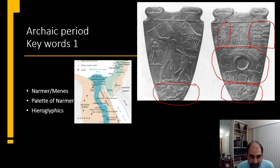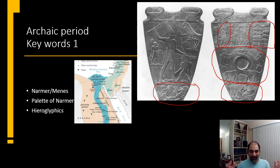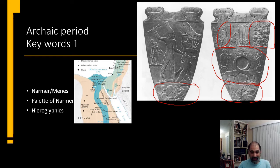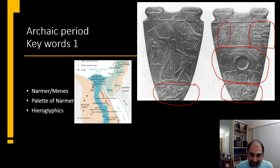The second big thing that happens during the Archaic Period is the development of writing — hieroglyphics. The story of hieroglyphics is pretty interesting. For the longest time, we had hieroglyphic writing, but nobody knew what it meant. No one could translate it.